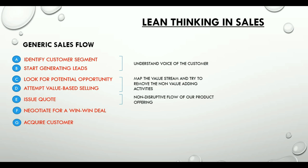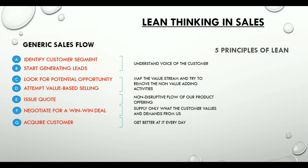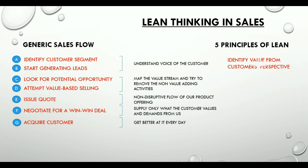Step E is about creating a non-disruptive flow, where our product or service offering moves freely to the next stage of the sales lifecycle. Step F indicates that we should not push our product or service to the customer; instead, we should supply only what the customer wants and only when there is a demand — thus creating an on-demand culture. Step G is the final stage when we acquire the customer and get better at it every day to stay competitive. Corresponding lean principles are: identify value from the customer's perspective for steps A and B, map the value stream for C and D, create flow for E, establish pull for F, and seek perfection for G.